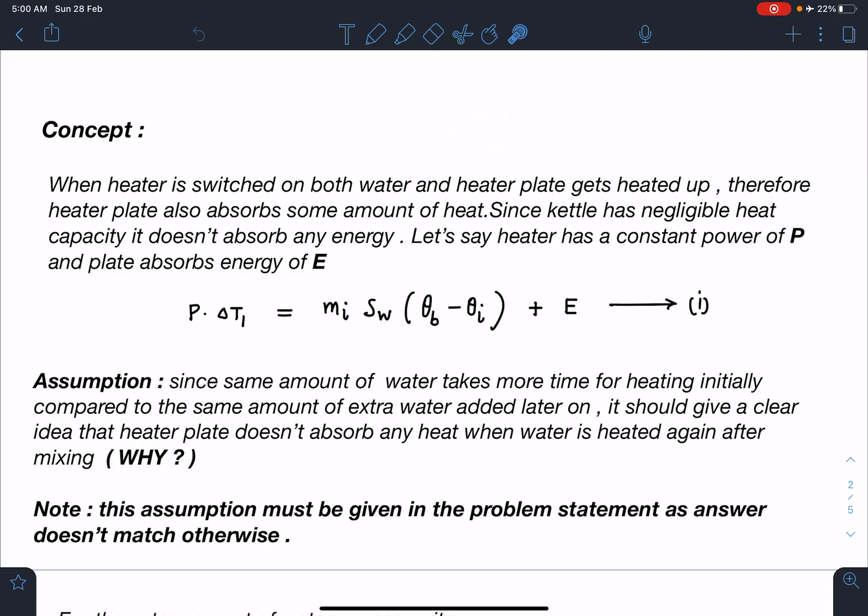If heater has a constant power P and the plate absorbs energy E, I can say the total energy given by the heater is P·Δt₁, where Δt₁ is 15 minutes in this problem. That will raise the temperature of water to boiling point: m_i·s_w·Δθ or Δθ where θ_final is boiling and θ_initial is zero. Boiling is 100 degrees.